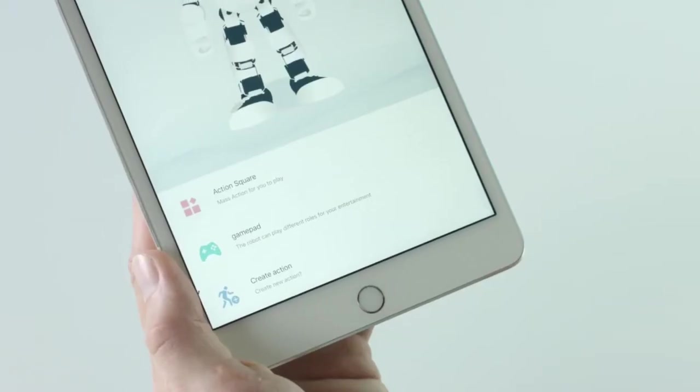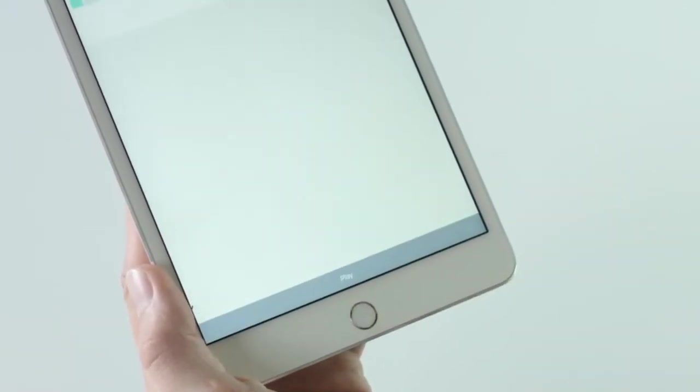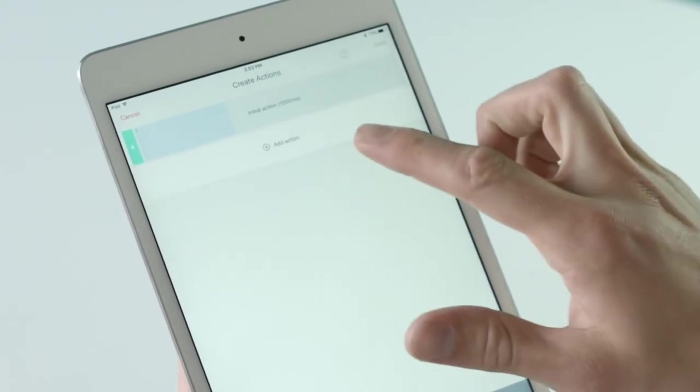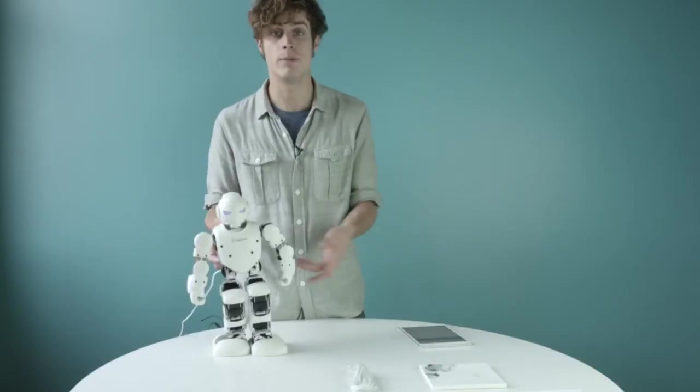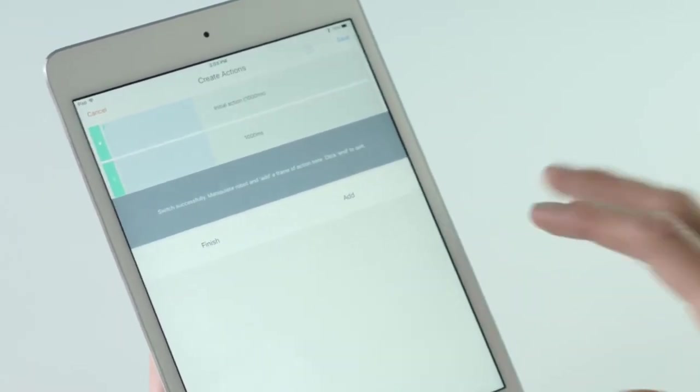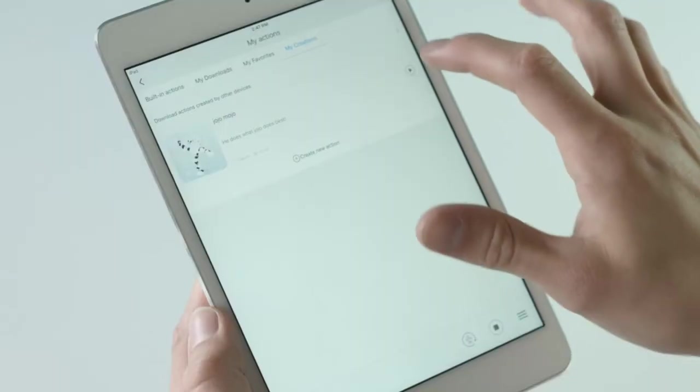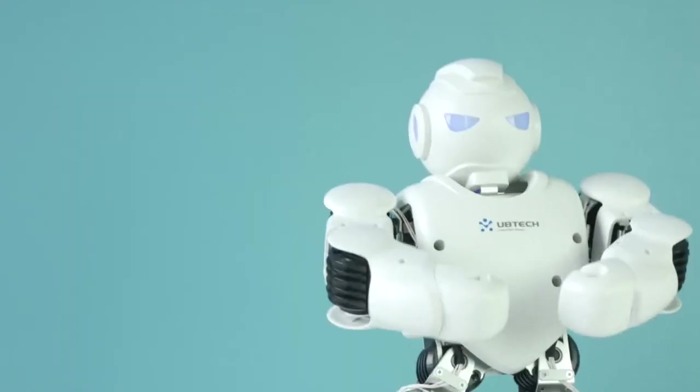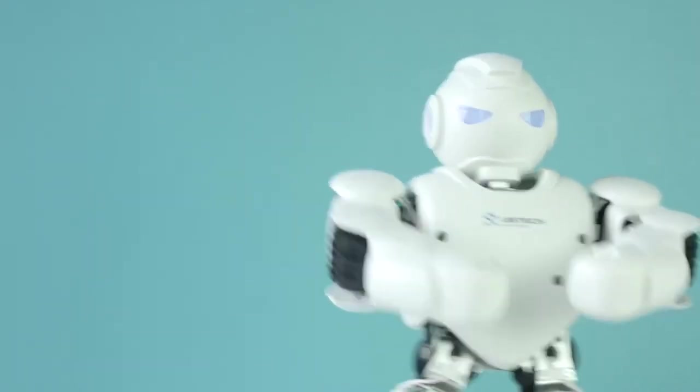To create new actions, click Create Action and enter the Create Action page. Click Add Action and then move your Alpha into a new position to create a new action. Do this for every action to create a range of movements. When done, save and name your series and watch Alpha perform your creation.